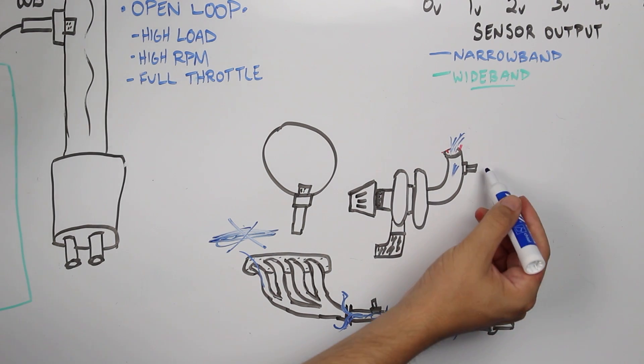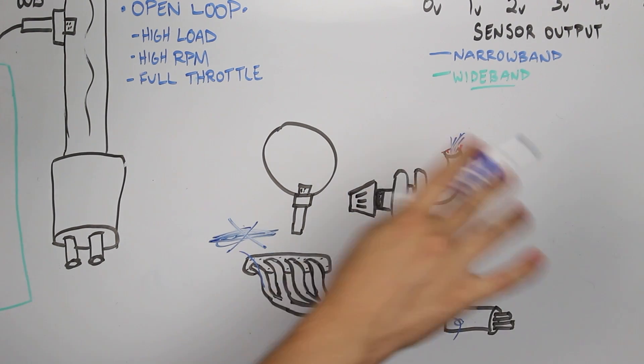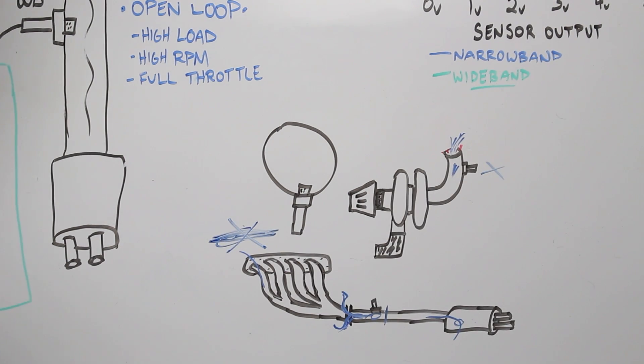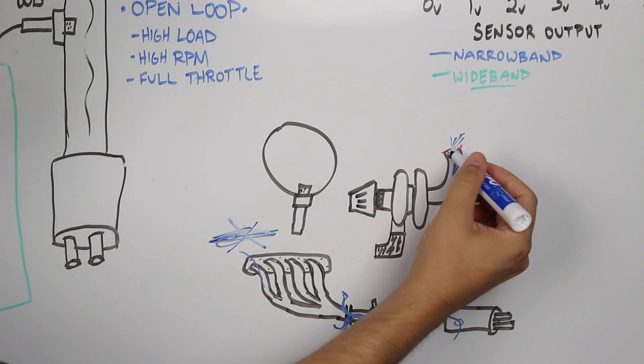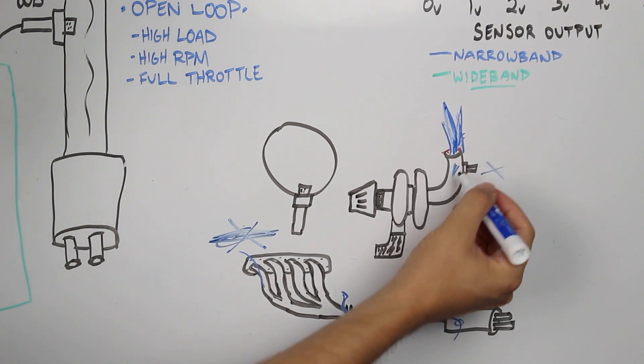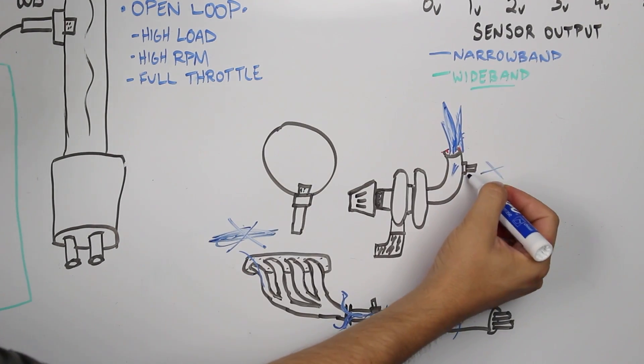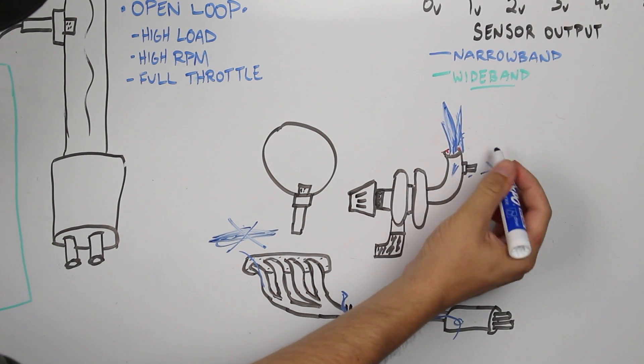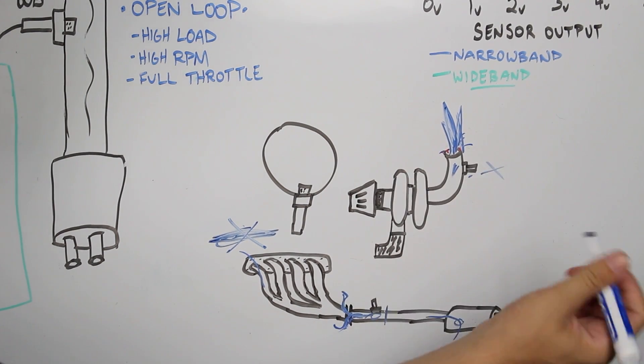Now at full throttle, there's going to be so much exhaust and flames and street cred shooting out of this pipe that the wideband sensor will actually get a good reading. It's not going to be able to suck in any fresh air in that condition.